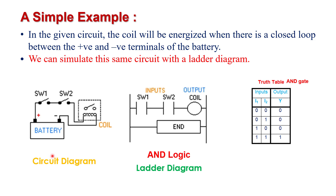Here we convert this electrical circuit diagram into a ladder logic diagram. Since the logic is AND gate logic, we use two vertical lines for power supply and one horizontal rung. Input is shown on the left-hand side and output is mapped on the right-hand side. Both switches are connected in series with the coil, because both are in series in the original circuit diagram. When both switches are closed, the output coil gets energized.